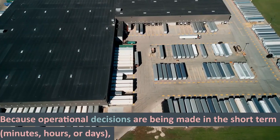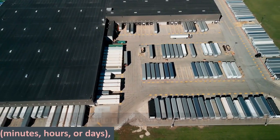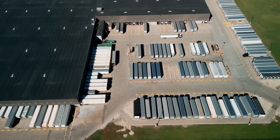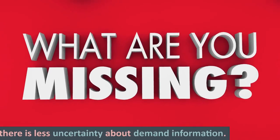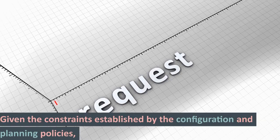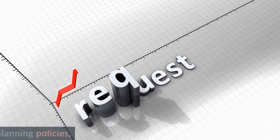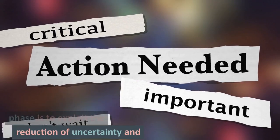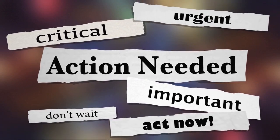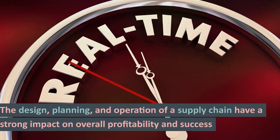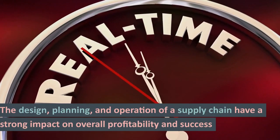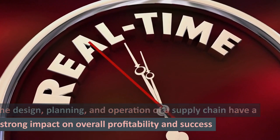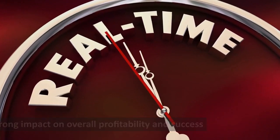Because operational decisions are being made in the short term — minutes, hours, or days — there is less uncertainty about demand information. Given the constraints established by the configuration and planning policies, the goal during the operation phase is to exploit the reduction of uncertainty and optimize performance. The design, planning, and operation of a supply chain have a strong impact on overall profitability and success.